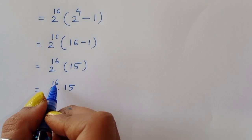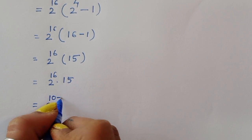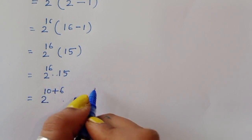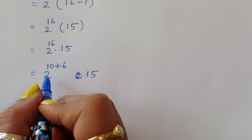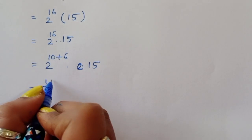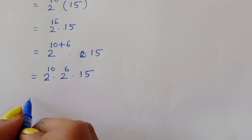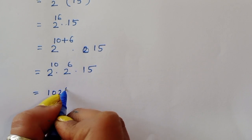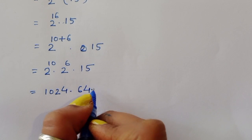Now we expand 2 power 16. We convert 16 to 10 plus 6. Again using the formula a power m plus n equals a power m times a power n, we write 2 power 10 times 2 power 6, times 15. The value of 2 power 10 is 1024, and 2 power 6 is 64. So we have 1024 times 64 times 15.